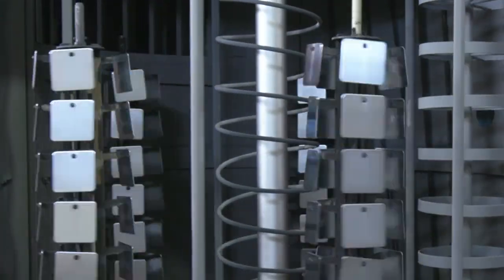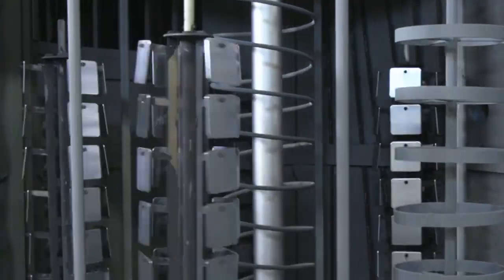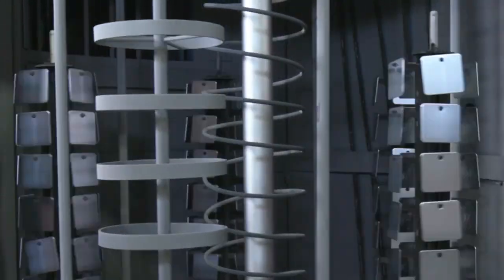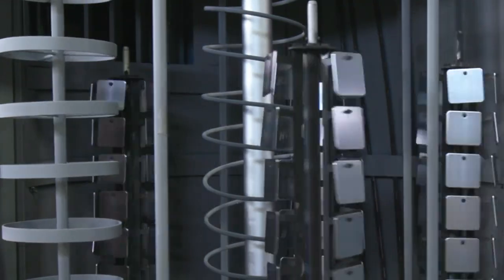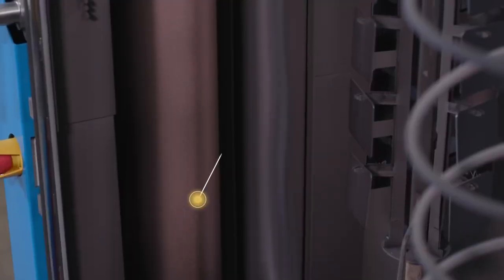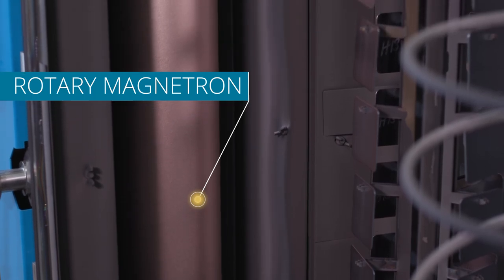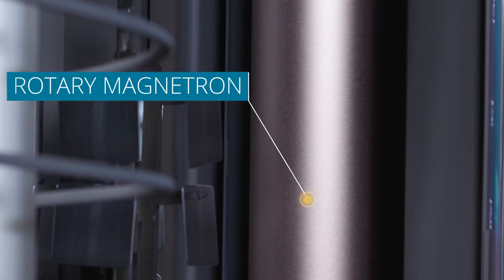To help provide a uniform coating on the surface of all parts, a turntable rotates each rack in a planetary motion around a central cathodic arc deposition source. The VT1500i system is also available with up to two optional rotary magnetron sputtering sources, one on each side.